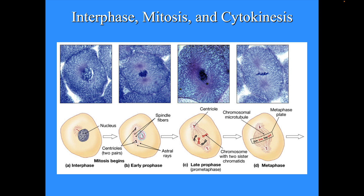In interphase you'll have a nucleus, but as mitosis begins in early prophase, the nucleus will disappear. You'll see the appearance of spindle fibers, and you'll also see that the chromosomes are starting to thicken into visible structures. Once you get into late prophase, you'll be able to see distinctly individual chromosomes.